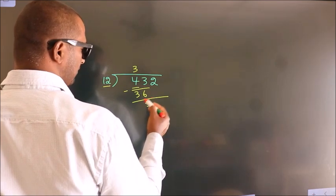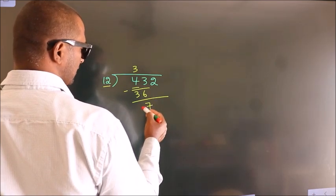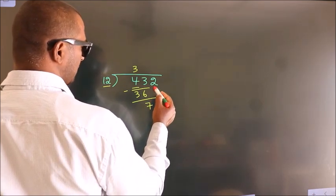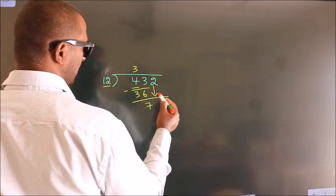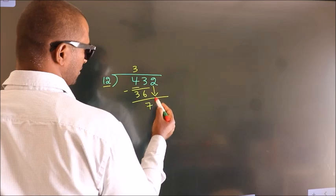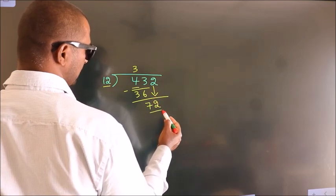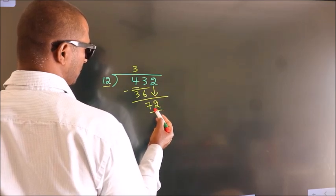After this, bring down the beside number — so 2 comes down, giving us 72.